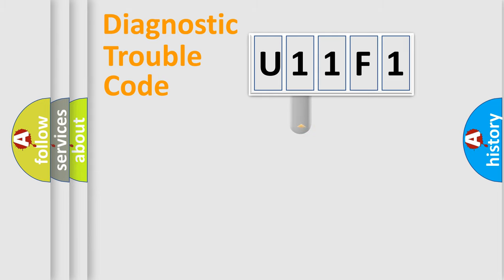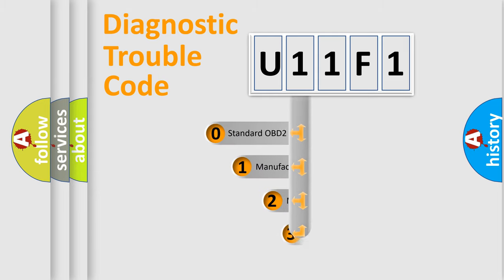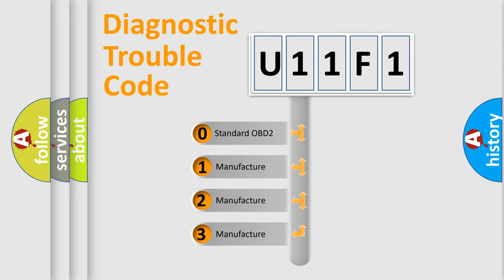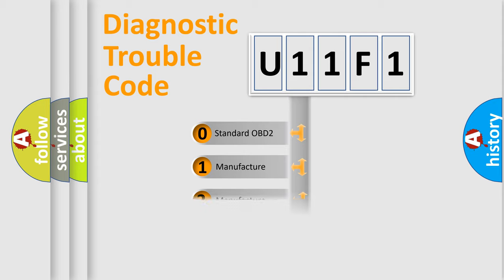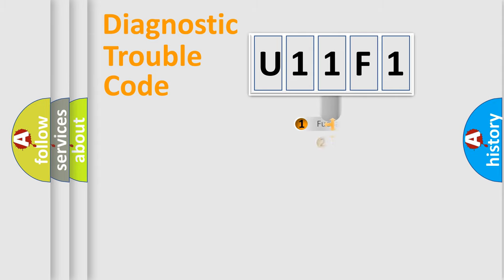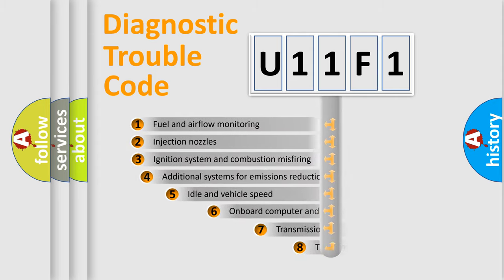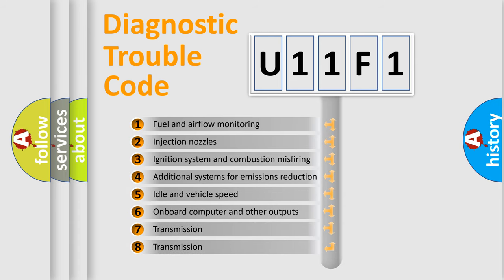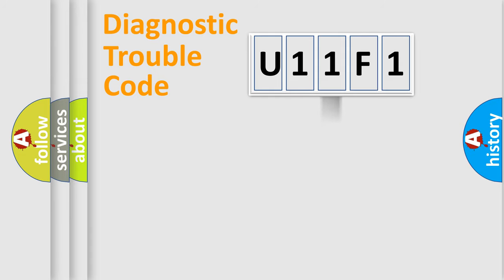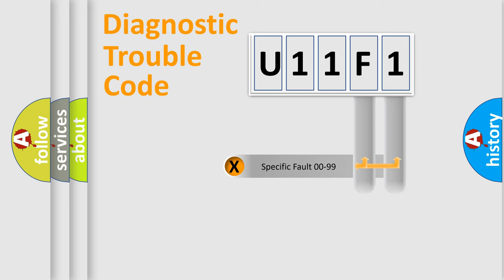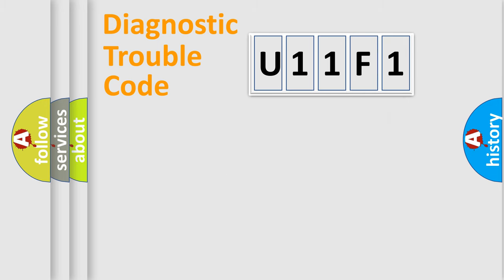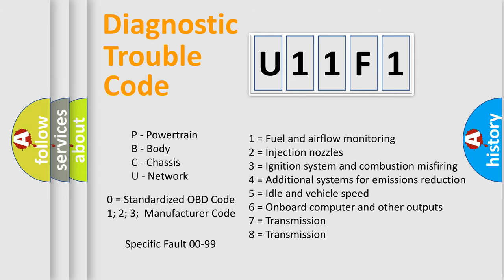This distribution is defined in the first character of the code. If the second character is expressed as zero, it is a standardized error. In the case of numbers 1, 2, or 3, it is a more specific car-specific error. The third character specifies a subset of errors. The distribution shown is valid only for the standardized DTC code. Only the last two characters define the specific fault of the group. Such a division is valid only if the second character code is expressed by the number zero.